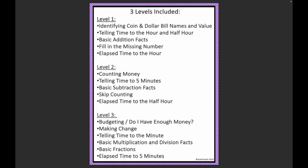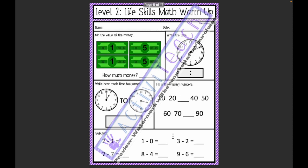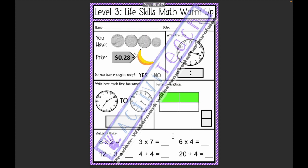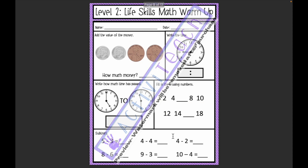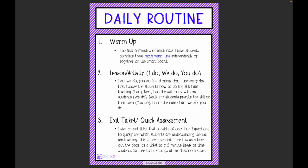In level one, students learn about identifying coin and dollar bill names and value, telling time to the hour and half hour, basic addition facts, fill in the missing number, and elapsed time to the hour. In level two, students learn counting money, telling time to five minutes, basic subtraction facts, skip counting, and elapsed time to the half hour. In level three, students learn budgeting and do I have enough money, making change, telling time to the minute, multiplication and division facts, basic fractions, and elapsed time to five minutes. These warm-ups are my favorite resource I've ever created — they're crucial skills students can practice every single day.